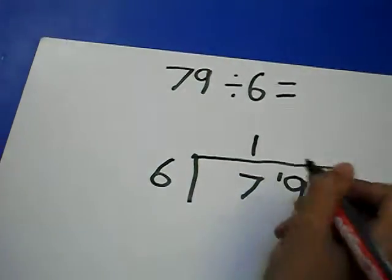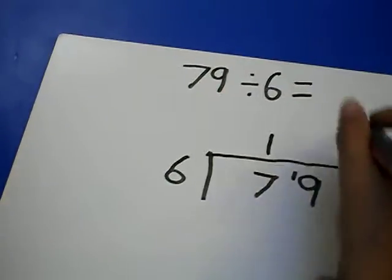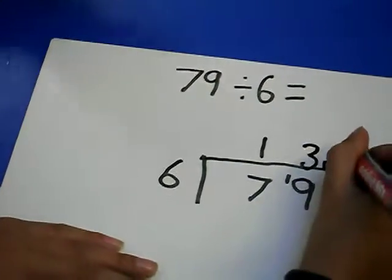6 and 7. Now, how many 6s go into 19? 3. There is going to be a remainder.